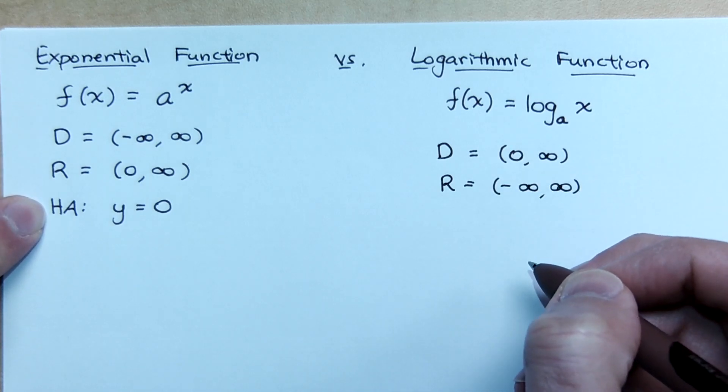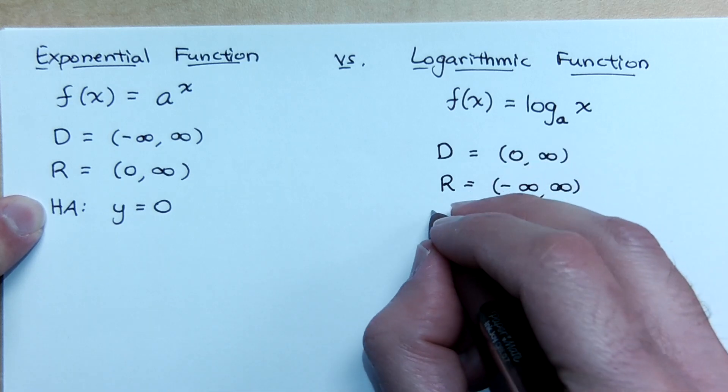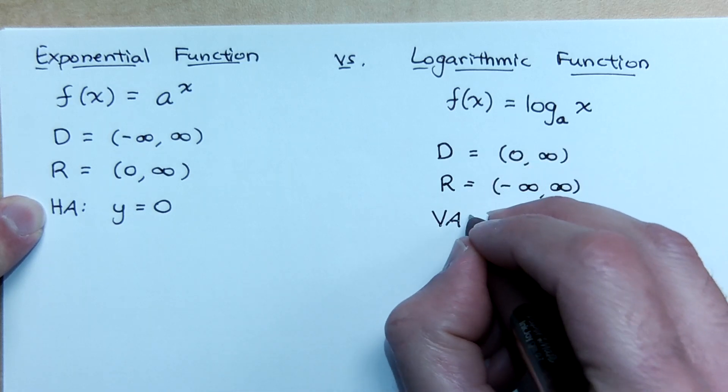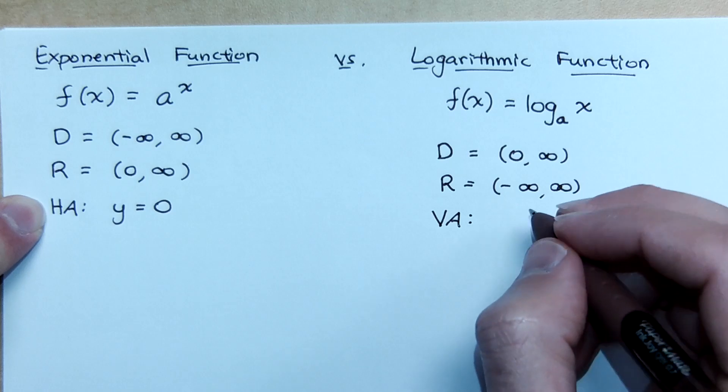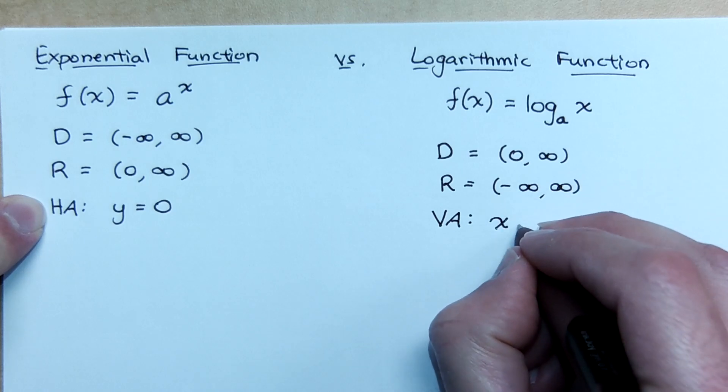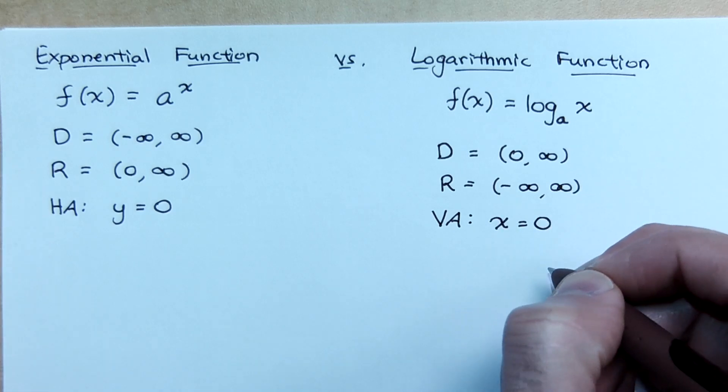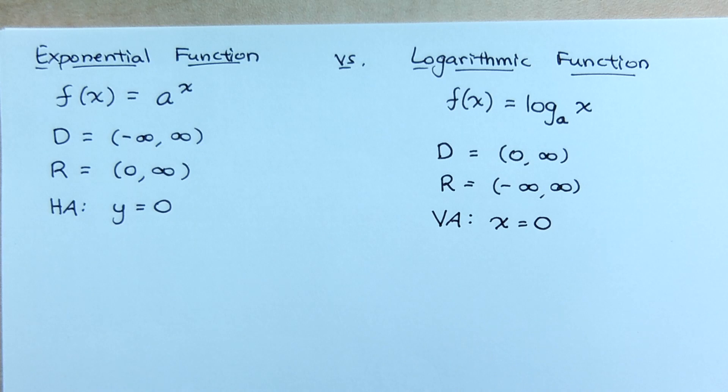And instead of having a horizontal asymptote, what are you going to have? Vertical asymptote. And what would be the equation for the vertical asymptote? X equals zero. So instead of y, it's x equals zero, which is where it goes from being a horizontal to a vertical asymptote.